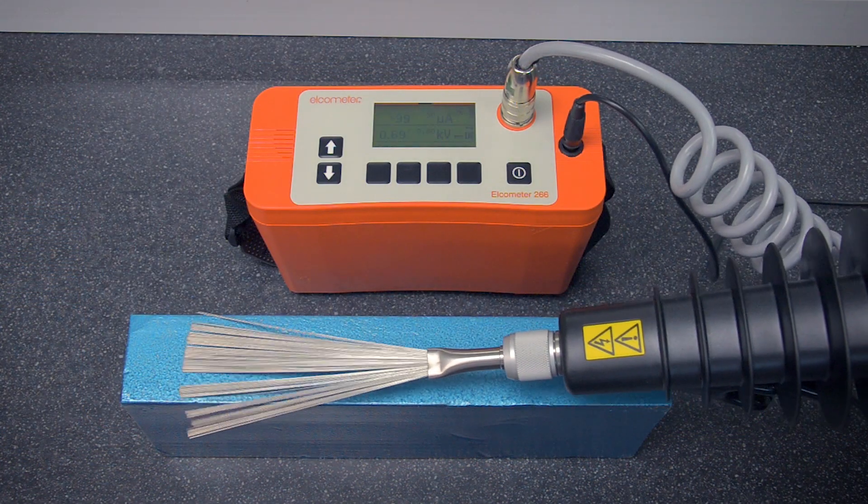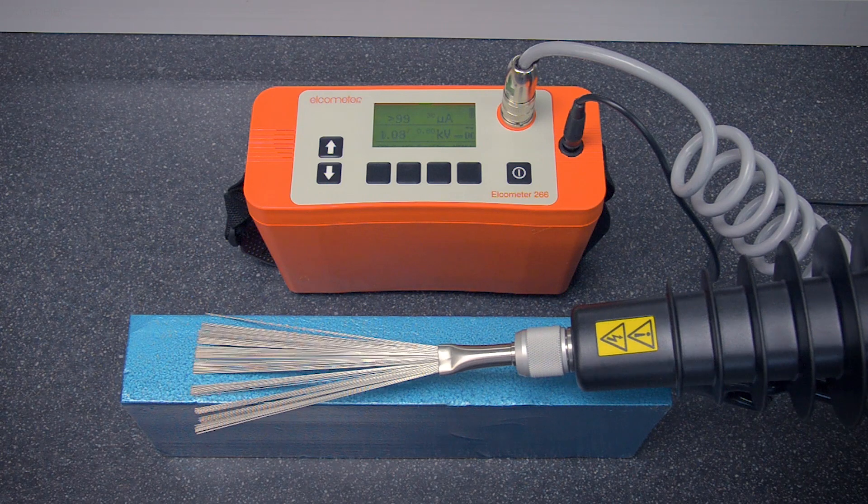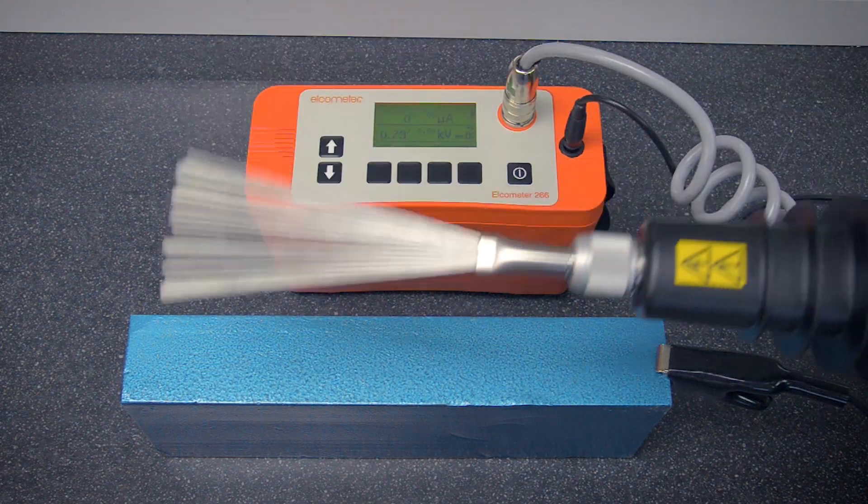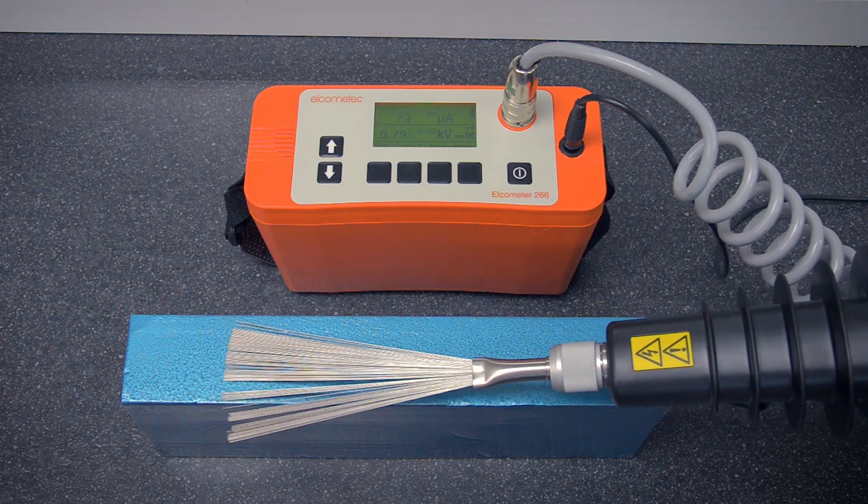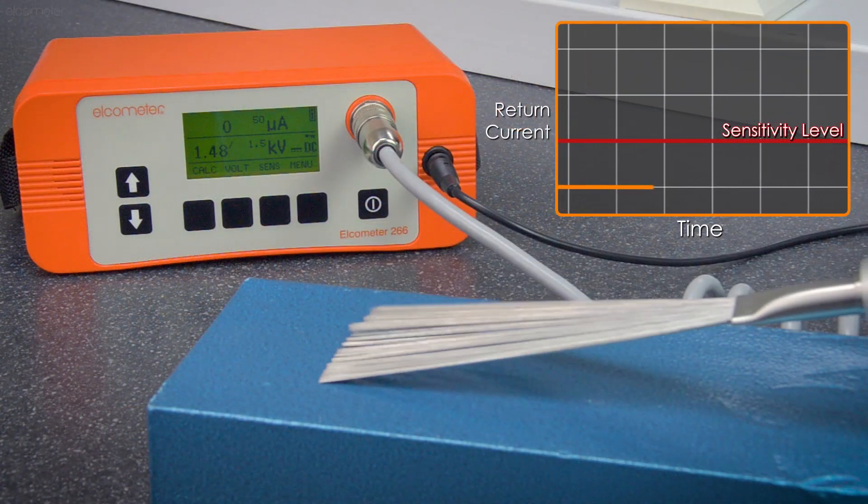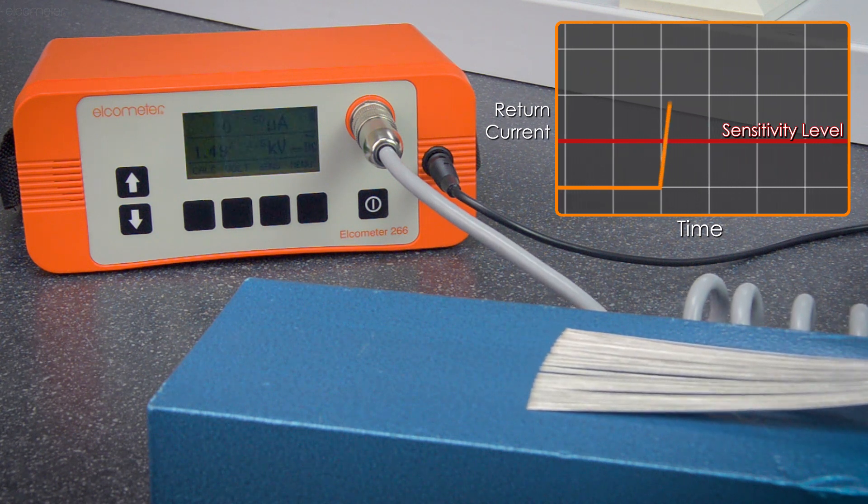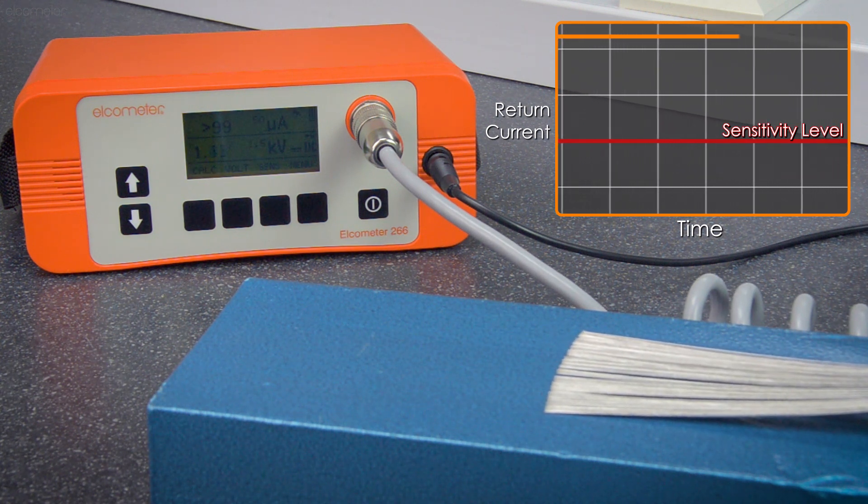If it's not sensitive enough, the unit won't alarm at all, potentially missing flaws. So, by setting the correct sensitivity, this ensures the unit only alarms when there really is a flaw.